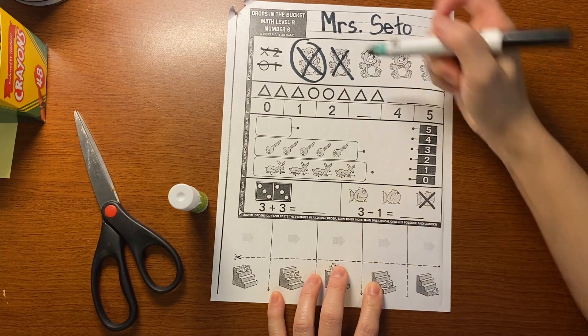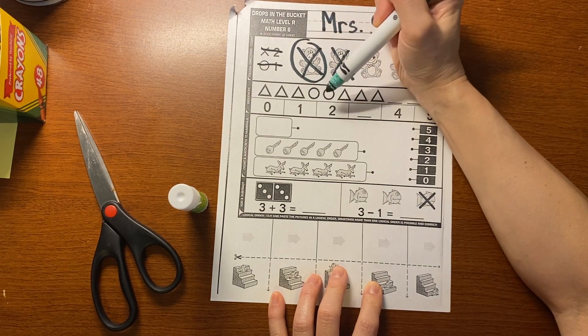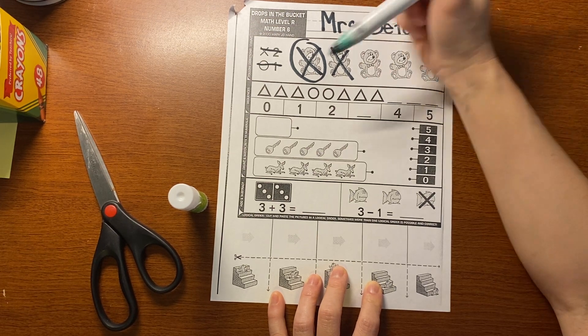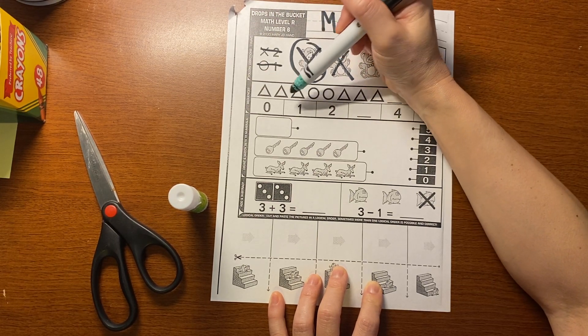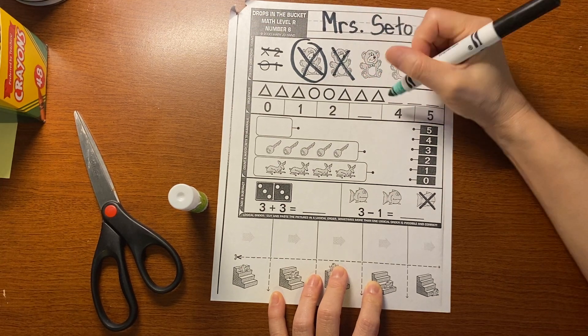Now we're going to do our pattern. Say it with me. Triangle, triangle, triangle, circle, circle, triangle, triangle, triangle. Triangle, triangle, circle, triangle, triangle, triangle, circle.